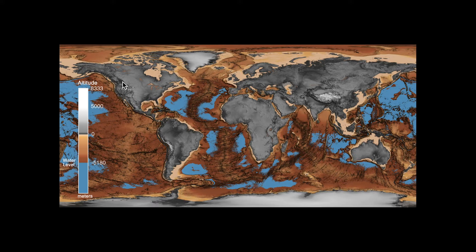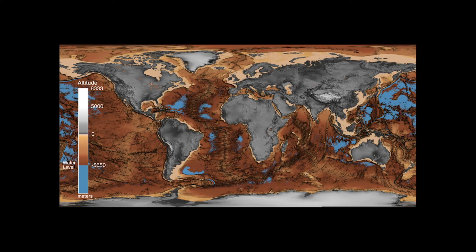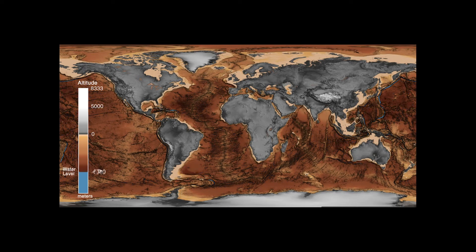As we remove more and more water, eventually we're only going to be left with a few narrow bands of water — such as here, the Puerto Rican Trench, and over here in the Pacific, the Marianas Trench. These are going to represent the deepest water on Earth today. In the case of the Marianas Trench, we get down to around 36,000 feet of seawater.